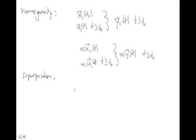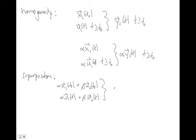A linear system meets both the additivity and the homogeneity property, giving you superposition. You can combine them: if I give my system alpha times x1 plus beta times x2 as initial state, and input alpha times u1 plus beta times u2, then the output will be alpha times y1 of t plus beta times y2 of t — where y1 would have resulted from x1, u1 and y2 from x2, u2.